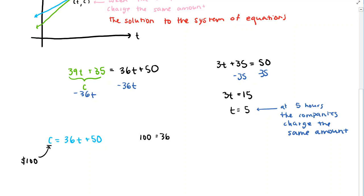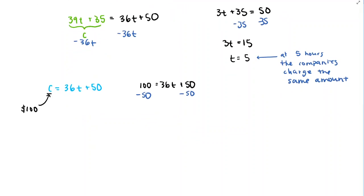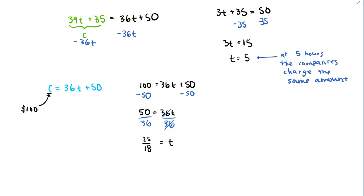So we have 100 = 36T + 50. Subtracting 50 from both sides gives 50 = 36T. Dividing both sides by 36, we get T = 50/36, which reduces to 25/18. That's a little more than one hour but not quite an hour and a half. We could use a calculator for a decimal, but 25/18 is the answer.